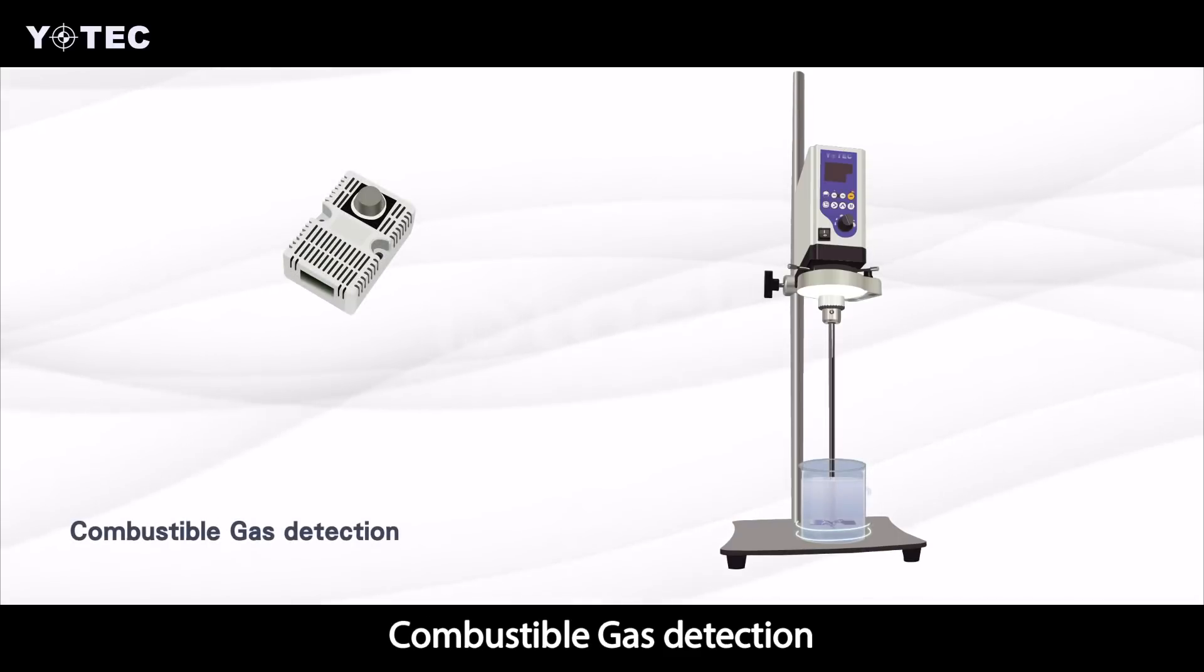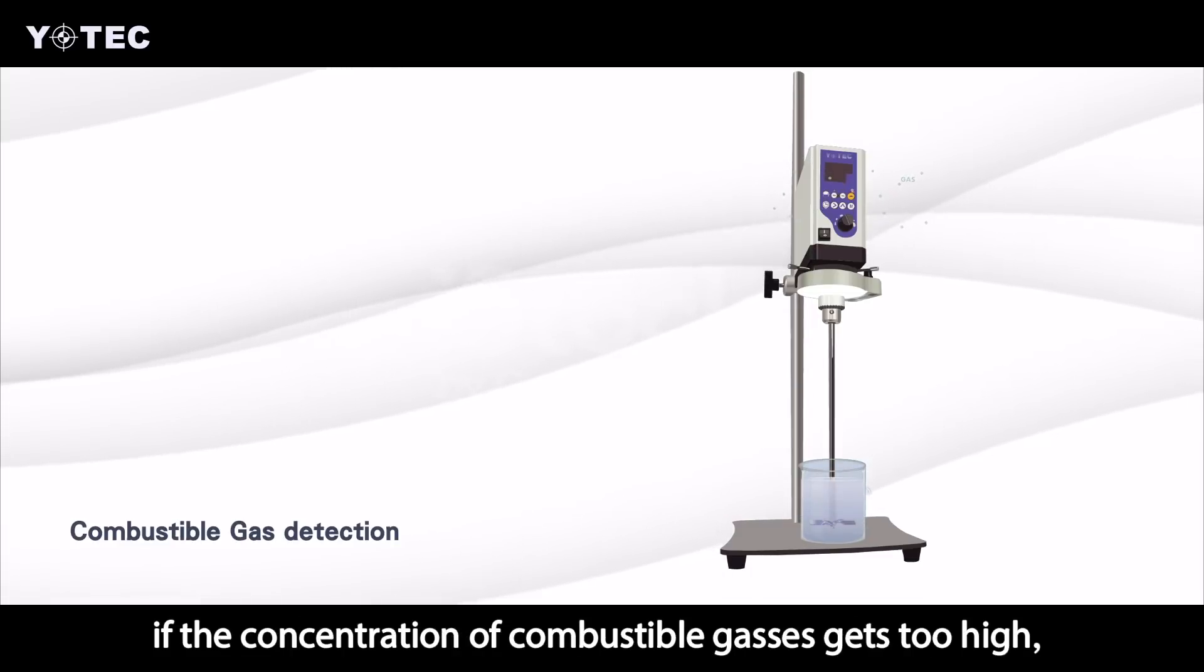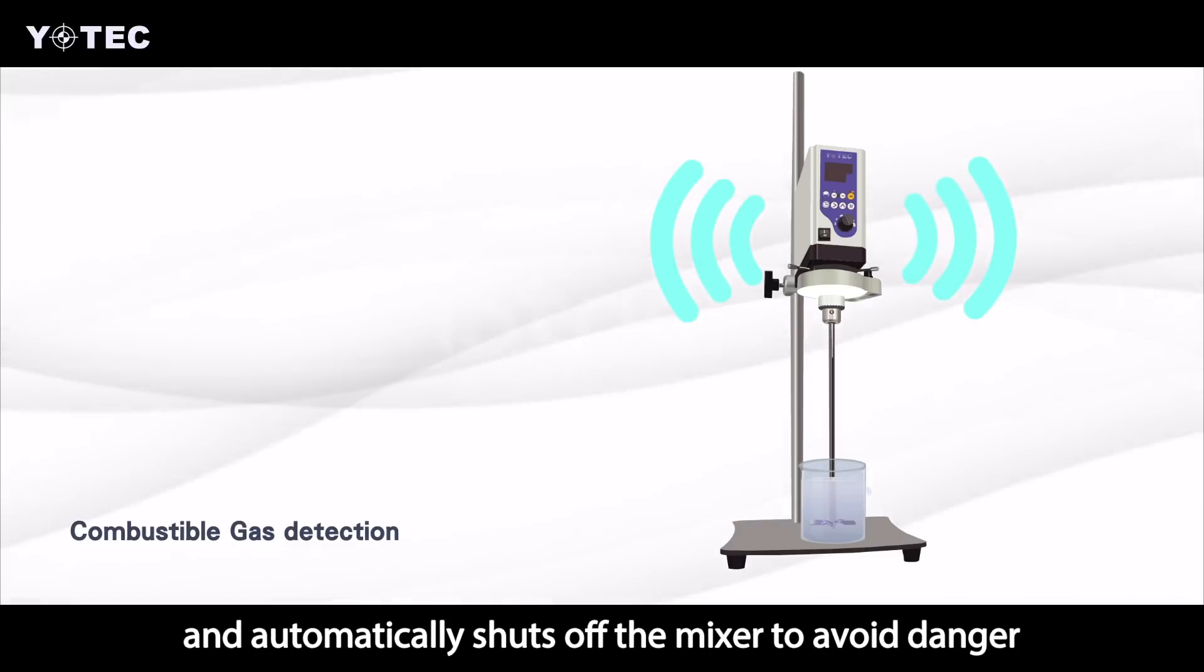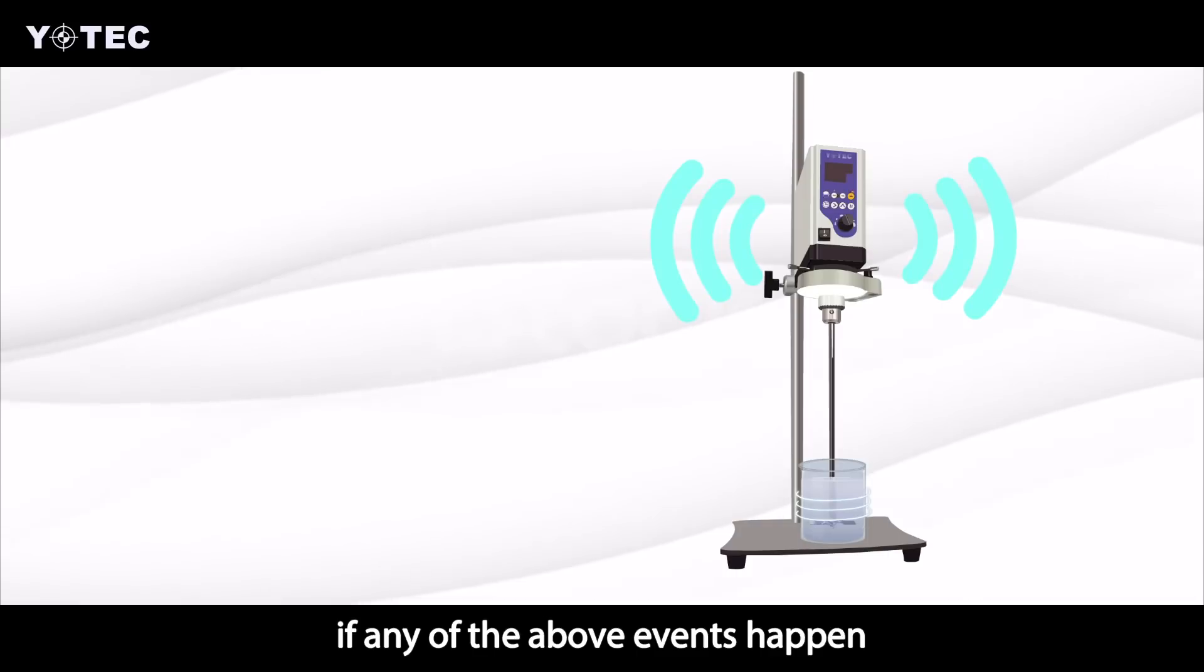Combustible gas detection can effectively detect if the concentration of combustible gases gets too high and automatically shuts off the mixer to avoid danger. A buzzer alarm will send alarming sound signals if any of the above events happen.